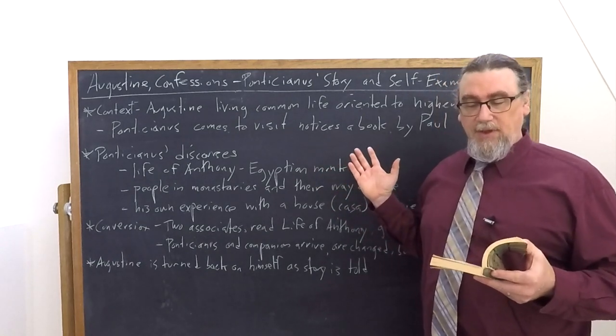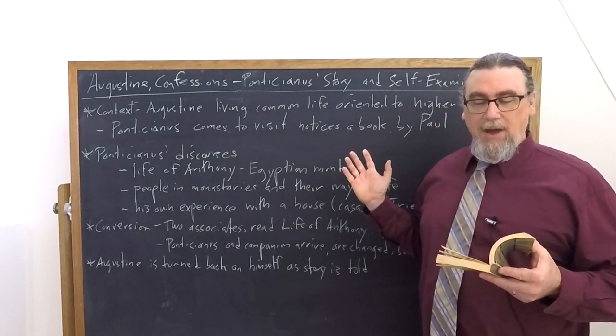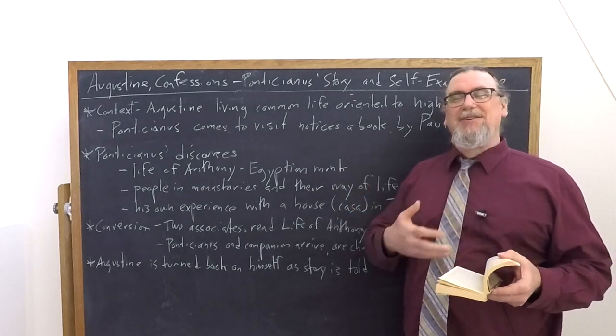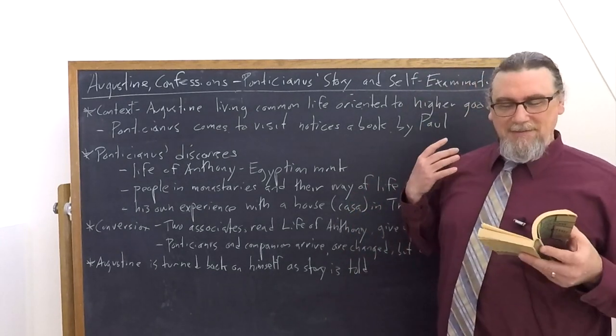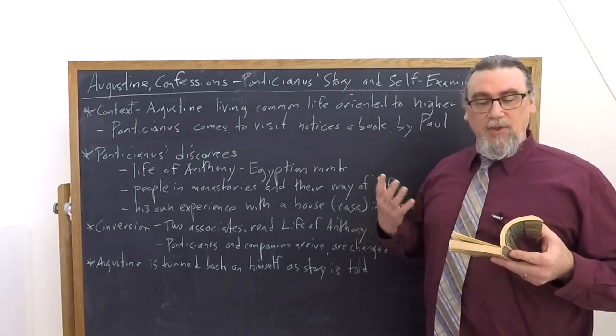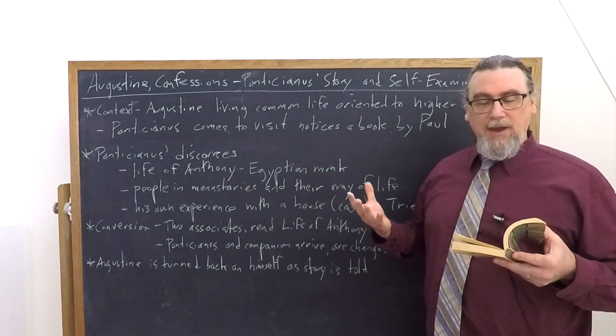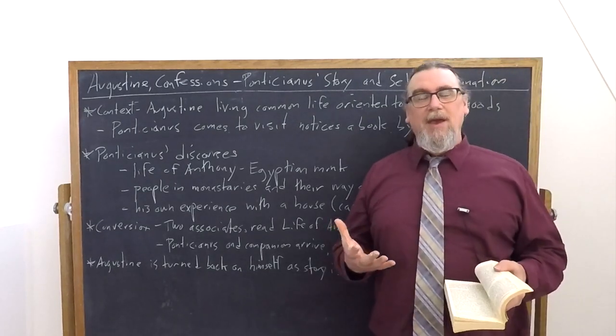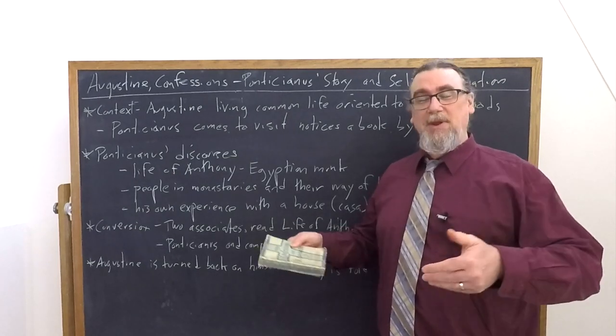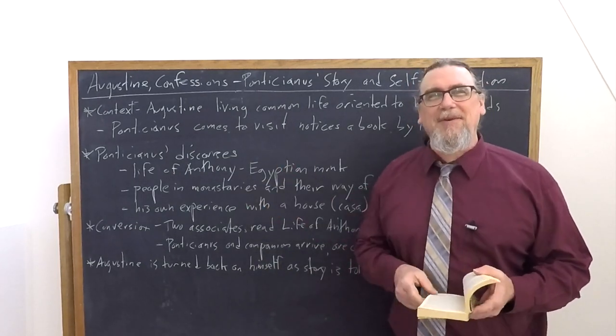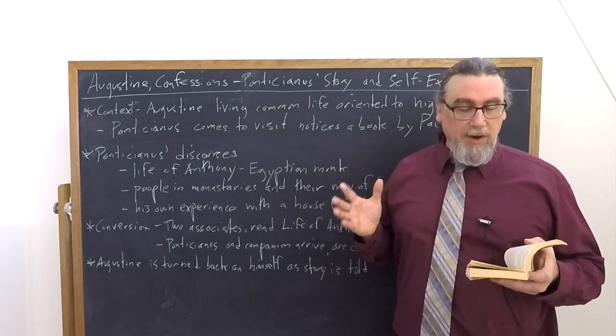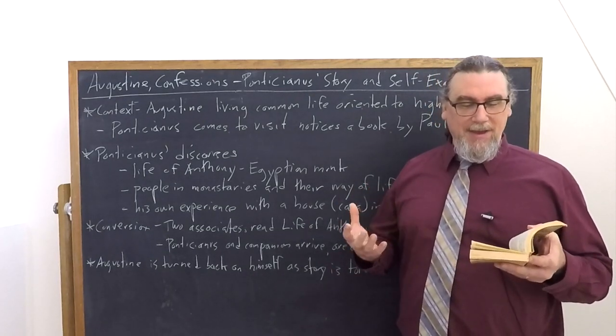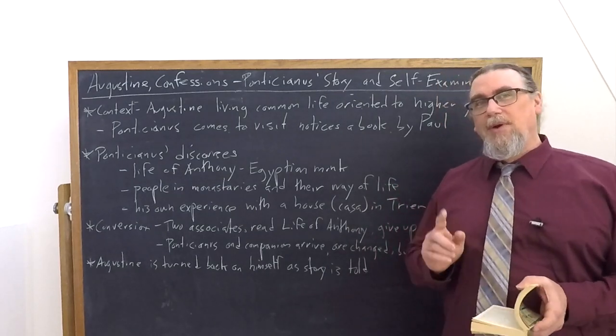So a book by Paul would be one of the many letters that Paul has written. And so Pontikianus notices this, opens it up and found to a surprise, it was by the apostle Paul. He thought it was one or other of the books that I was wearying myself out in teaching. So books of rhetoric, books of literature, books of philosophy. And so he smiles and looks at me as if to congratulate me and express surprise that he suddenly found these writings and these alone before my eyes. Why? Because Pontikianus is a Christian. And so he's like, oh, this is cool. I mean, Augustine, are you actually a Christian? Are you just somebody interested in Christianity? You're reading a good part of it right here. And so Augustine says, I told him how I expended very great pains on those scriptures.